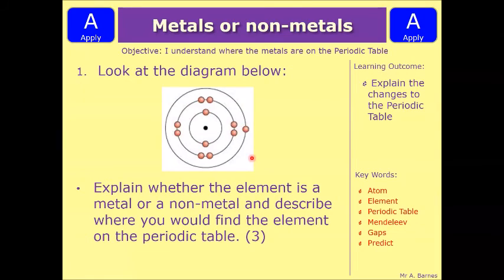Okay let's look at a question on this topic then. So this one is a 3 marker and it says explain whether the element is a metal or a non-metal and describe where you would find the element on the periodic table and this is the element you're looking at. So look at the electronic configuration and think through how would you answer that question. Pause the video, have a go and we'll see if you're correct in a minute.